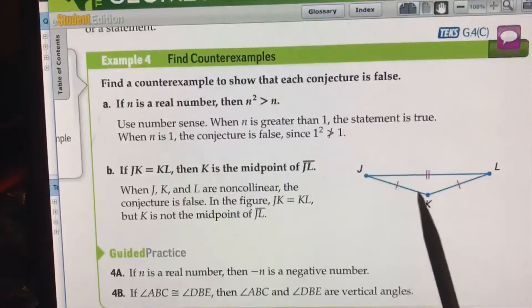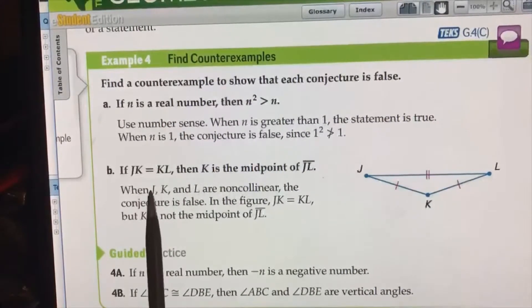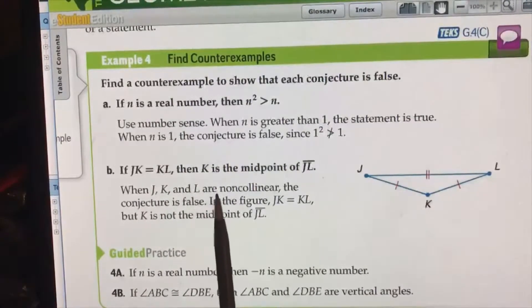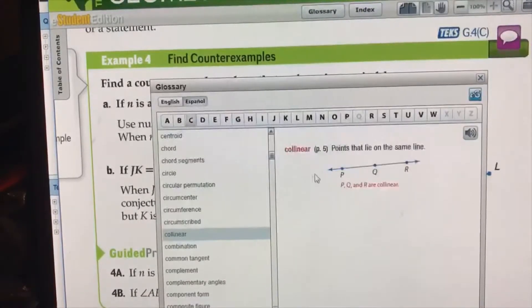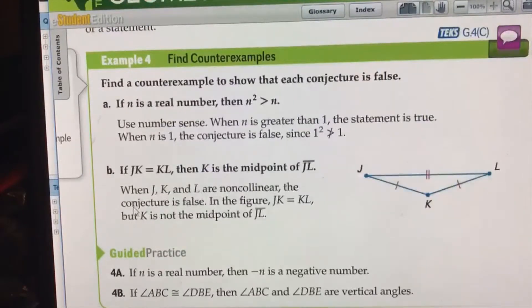These are the two equal segments. When JK and L are non-collinear, now collinear points are points that lie on the same line, right? So if they're non-collinear, these points would not be on the same line.